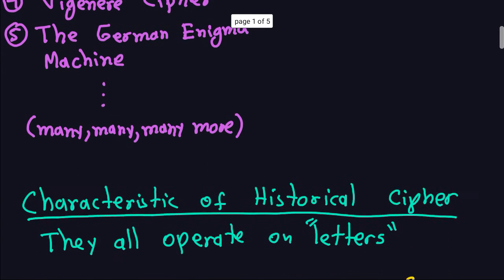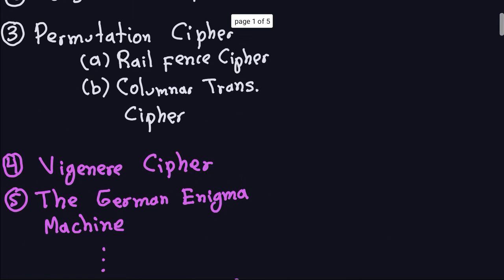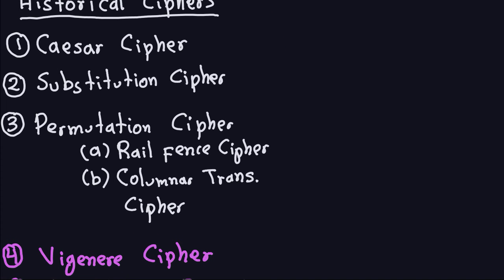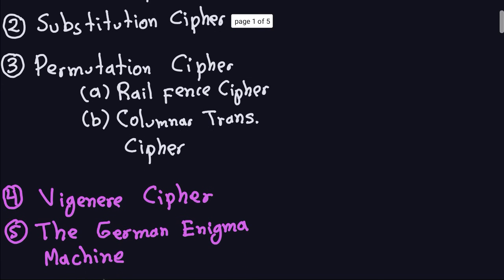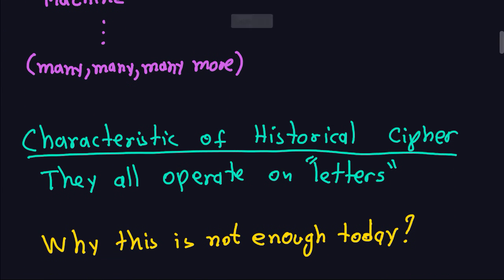But that's not enough today. These old ciphers worked very well because there was an application for them in a period of time with no computers — communication was done by paper, usually for war, espionage, or similar purposes. But today we are in the time of computers, so we need to do something else. That's why working on letters is not enough today.